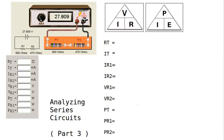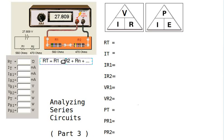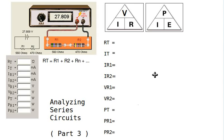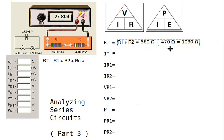We want to first find the total resistance of our circuit. The general formula for resistances in a series circuit is: resistance total equals R1 plus R2 plus whatever other resistors we have. So in this case, R1 plus R2 is 560 plus 470, which gives us 1030 ohms total resistance.